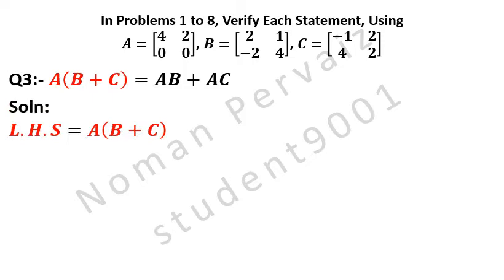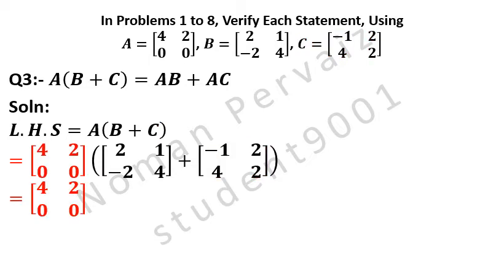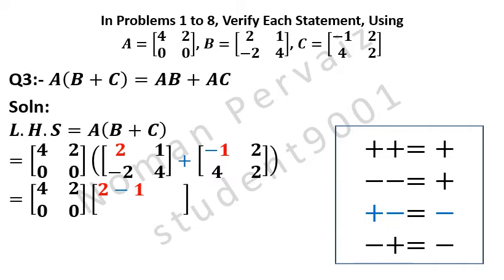We are taking the left-hand side of the above equation. So A(B+C) is equal to: here we write the value of matrix A, then matrix B, plus matrix C as given in the question. Then 2 is written from the first matrix, and plus minus gives minus as shown in details.